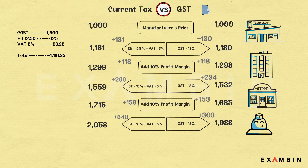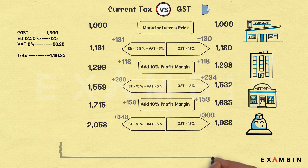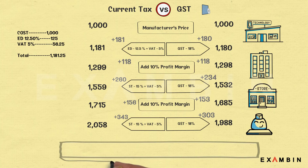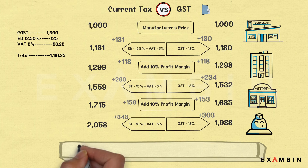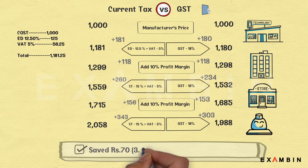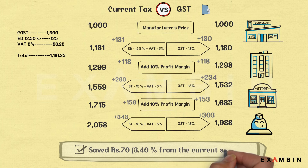So the end price of a manufacturer-priced item at one thousand rupees goes up to 2058 rupees in the current tax system and 1988 rupees in the GST system. One can save 70 rupees if GST is implemented — that is a 3.4% savings from the current system.